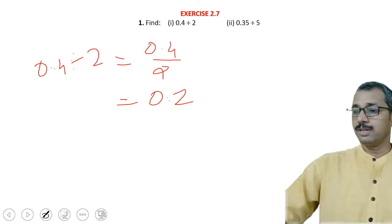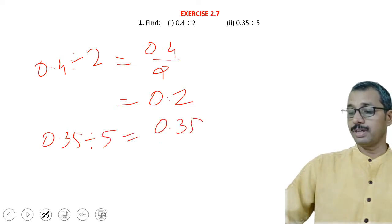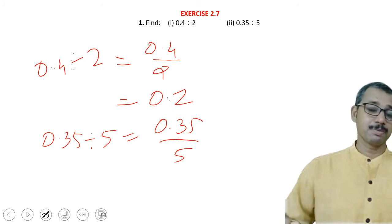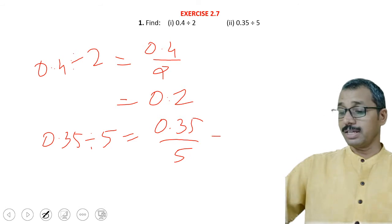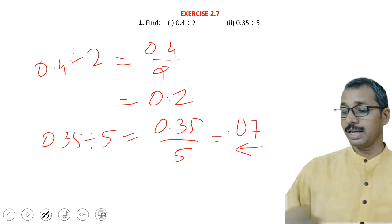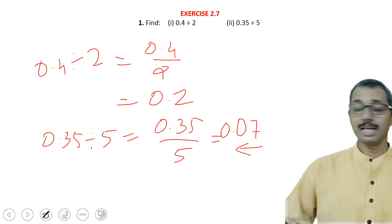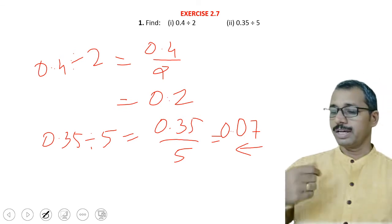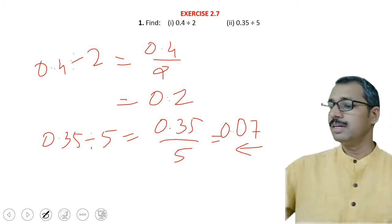Now here is an important one: 0.35 divided by 5, which is 0.35 upon 5. There are two decimal places. Now, 5 sevens are 35, and since there are two decimal places, we shift the decimal point two places — the answer is 0.07.